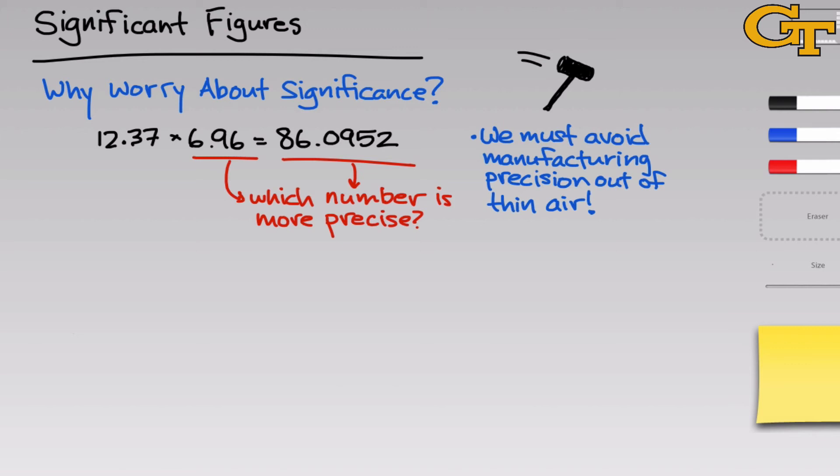So what's the big picture here? Well, as we've seen indirectly, the more significant digits a number has, the more precise it is. And this idea of significance and the connection to precision is really important to keep in mind. So the 86.0952 here is far more significant and more precise than the 6.96.